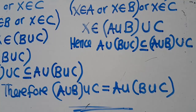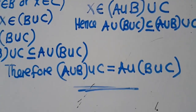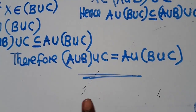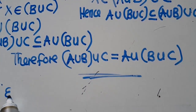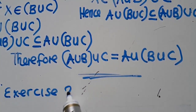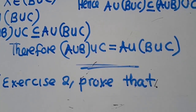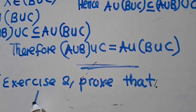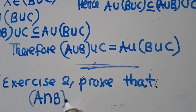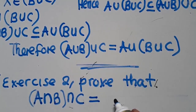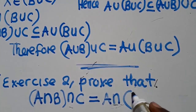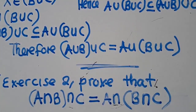Let me give you another question. I want to see how many people understand this part. This is Exercise 2. Prove that A∩(B∩C) = (A∩B)∩C. I want you to prove this one — this is your exercise.